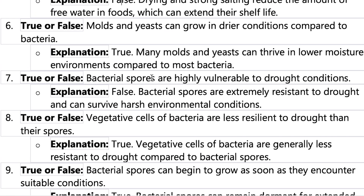Number seven: bacteria spores are highly vulnerable to drought conditions. This is false — bacteria spores are actually the outer layer of the bacteria, really resistant to drought, and can survive in harsh environmental conditions. They're like an armor suit for the bacteria.